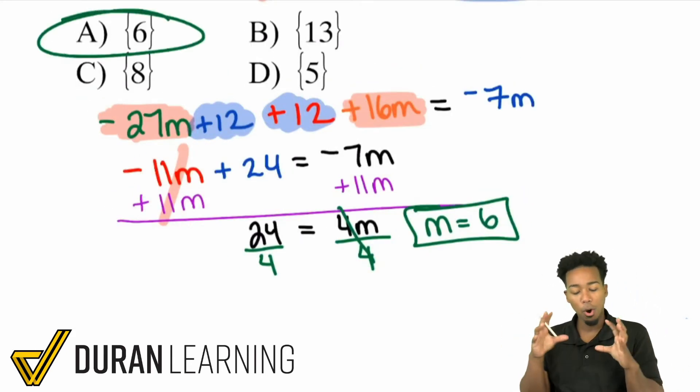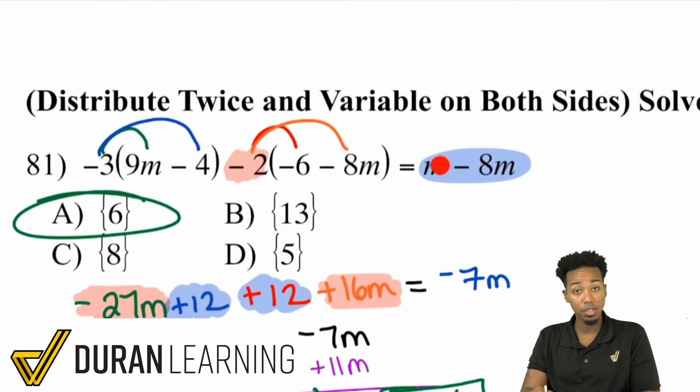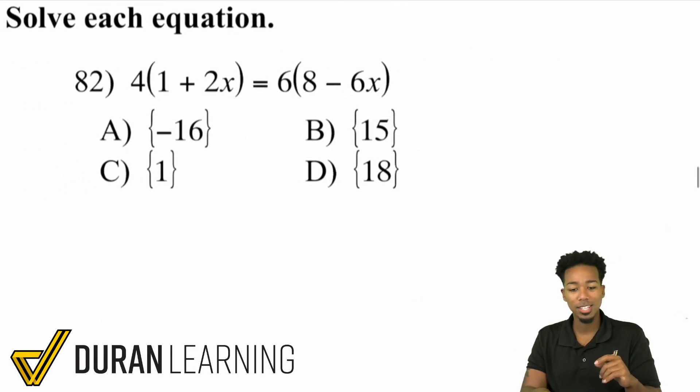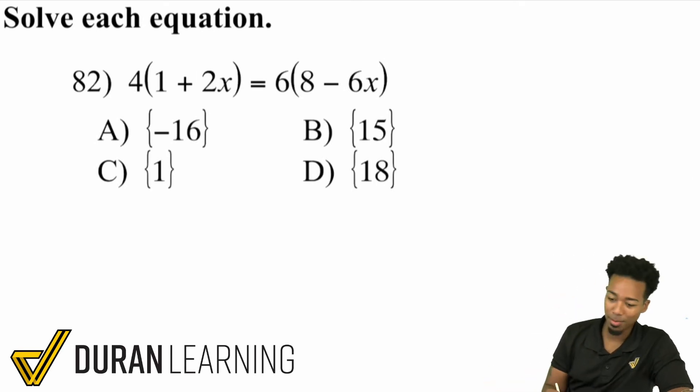Hopefully you were able to understand that everything after this first step of distributing everything, we've done this already, we have been doing this. This is all just bringing everything we've been doing together to solve seemingly complex equations. Let's go ahead and get into number 82 here.